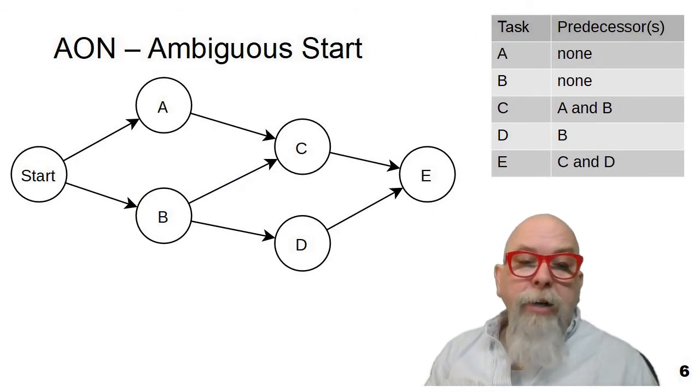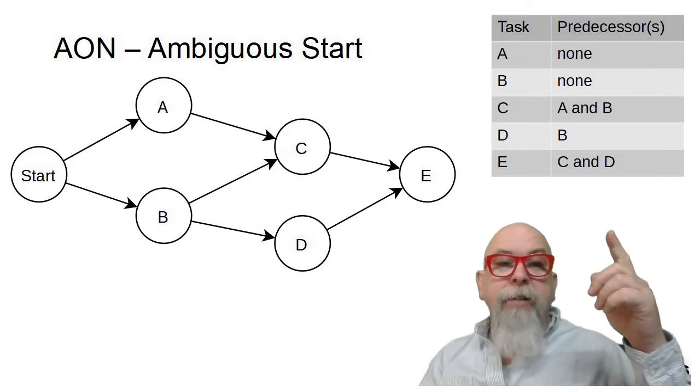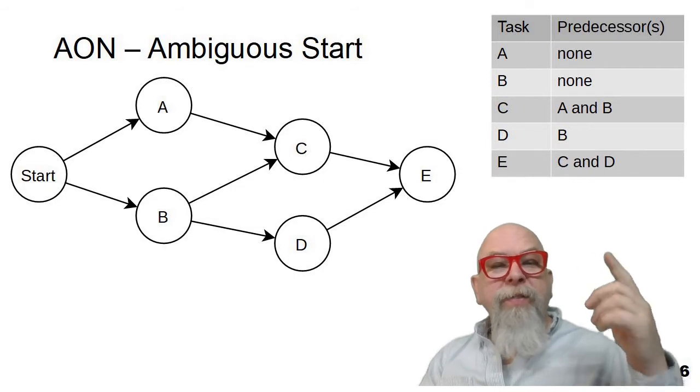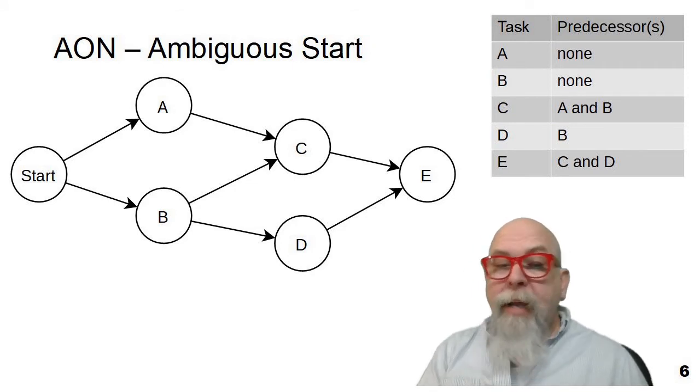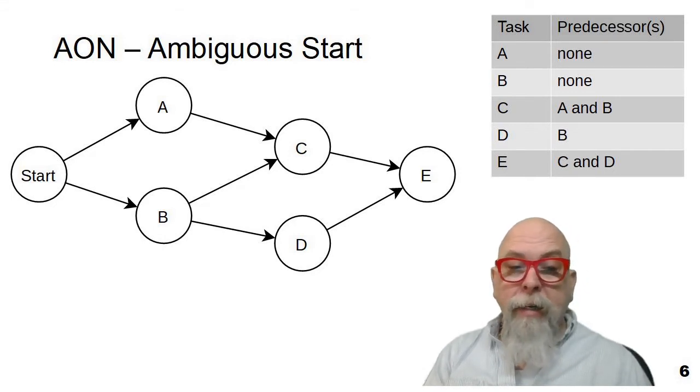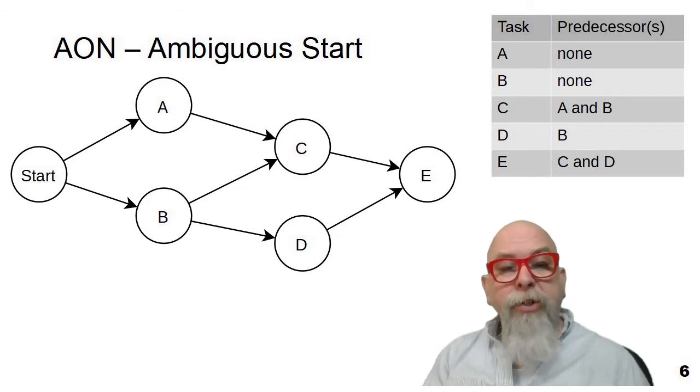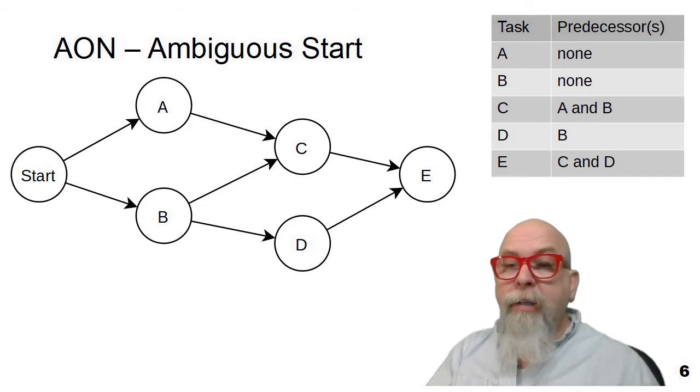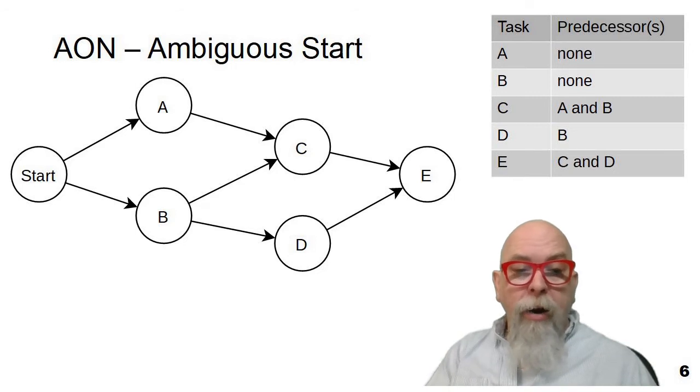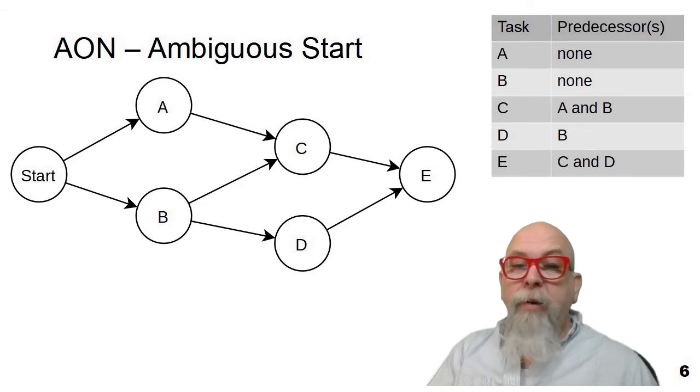So let's look at a second project, a second network of tasks with their predecessors. But notice that this one is a little different, because tasks A and B neither have prerequisites. So task A could be started at the beginning, task B could be started at the beginning, or they could be started simultaneously. Because of that ambiguous start, there's no clear start, I put a special node over on the far end called start. And you can see that start is kind of a dummy node, but it's a node that says start here, and we can then go once we start to A or B or both at the same time, and they don't have prerequisites.